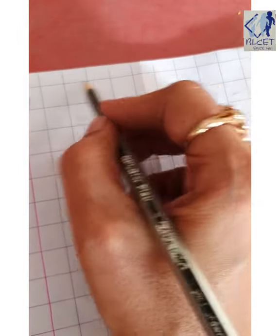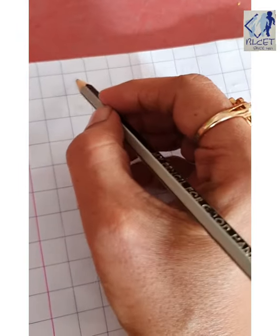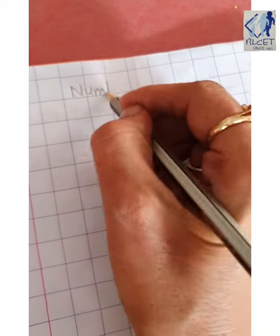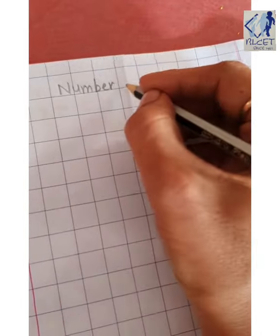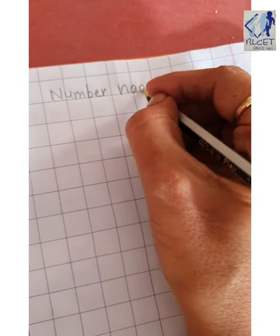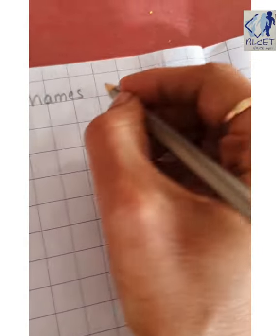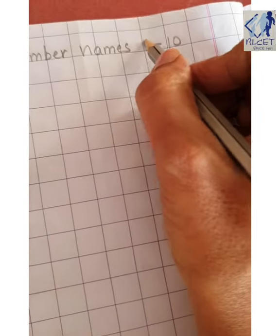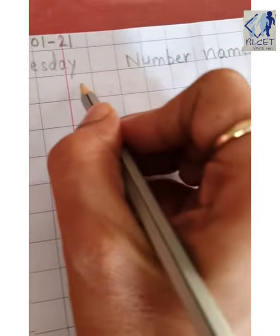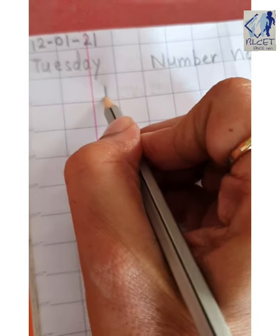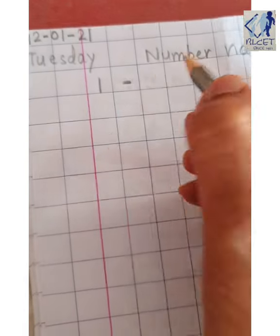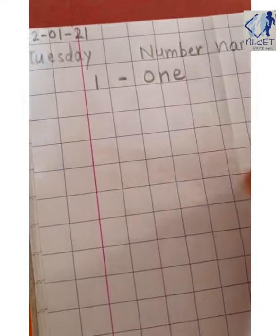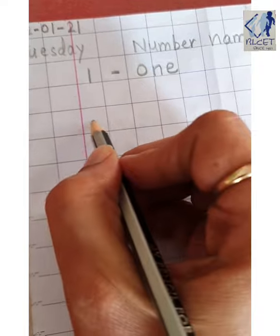Now write the heading here. Number names 1 to 10. Now here you will write the number. Put a dash and then you will write O-N-E, 1. Leave 1 box.